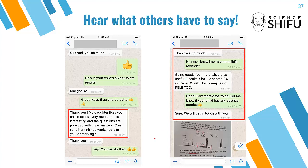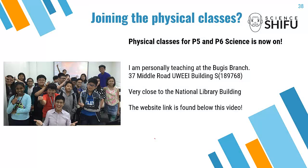So what are you waiting for? Sign up now, get your 7-day free trial, and immediately access the online lessons. Start your revision and learning of science concepts, and discover the various ways science knowledge is tested in your exam. For those who prefer physical classes, I'm currently teaching at the Bugis branch at 37 Middle Road, UWE Building — less than 2 minutes' walk from the National Library building.